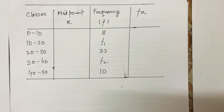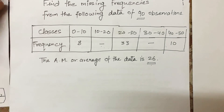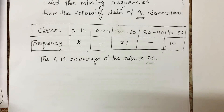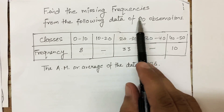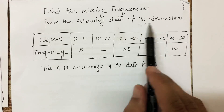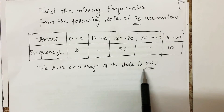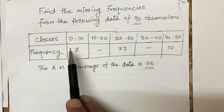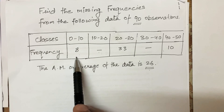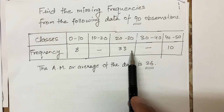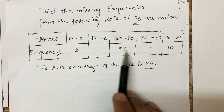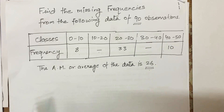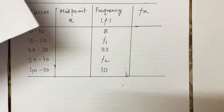In this lecture, I'm going to discuss a problem about missing frequencies. I need to find the missing frequencies from the following data of 90 observations. There are two frequencies which are missing. I know how many data points fall in 0–10 (which is 8), 40–50 (which is 10), and 20–30 (which is 33), but 10–20 and 30–40 are missing. The arithmetic mean is given as 26. To find two missing frequencies, I need the total number of observations and the arithmetic mean.